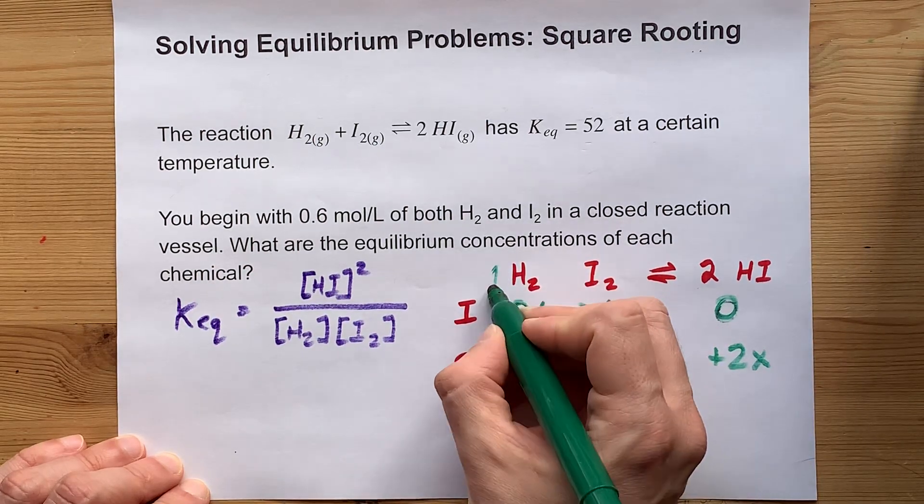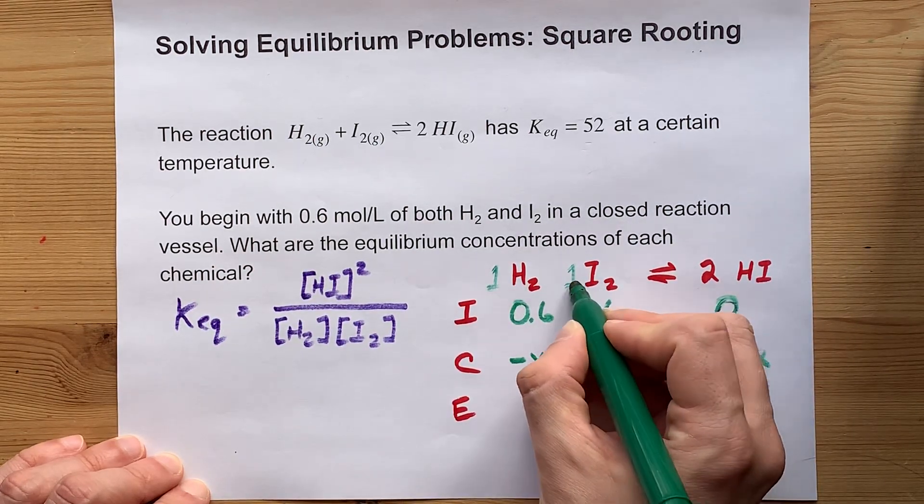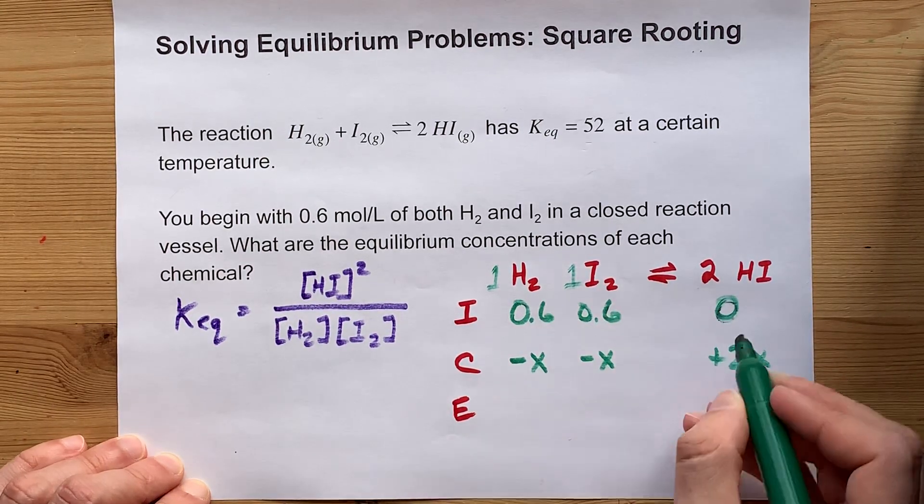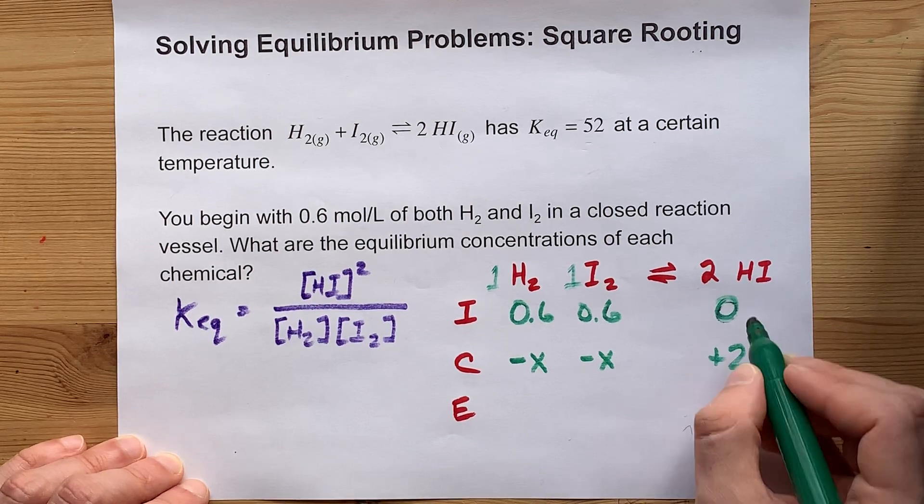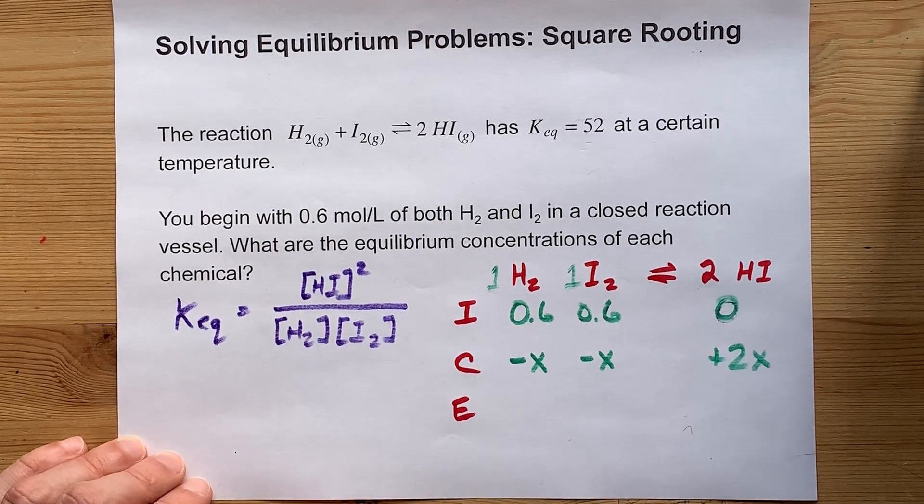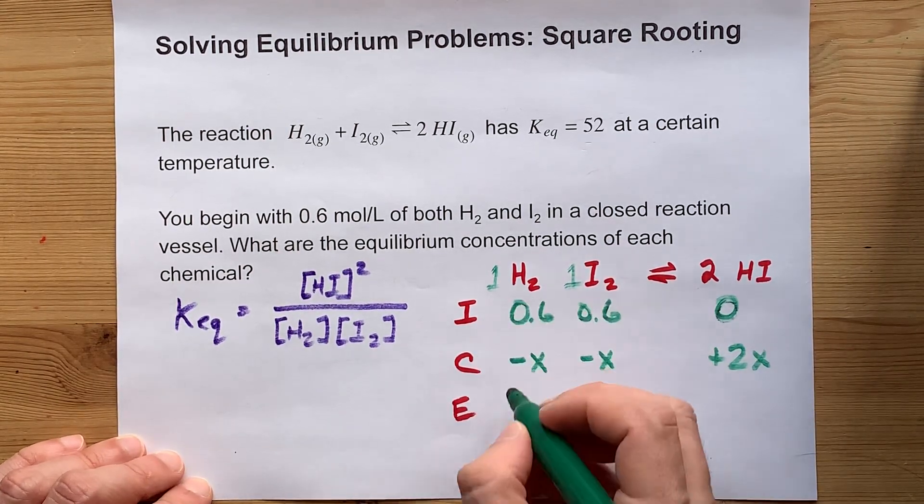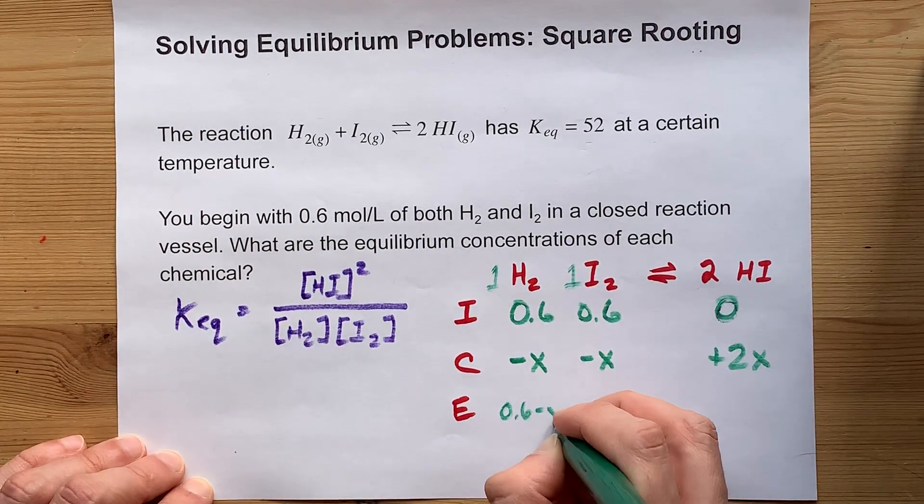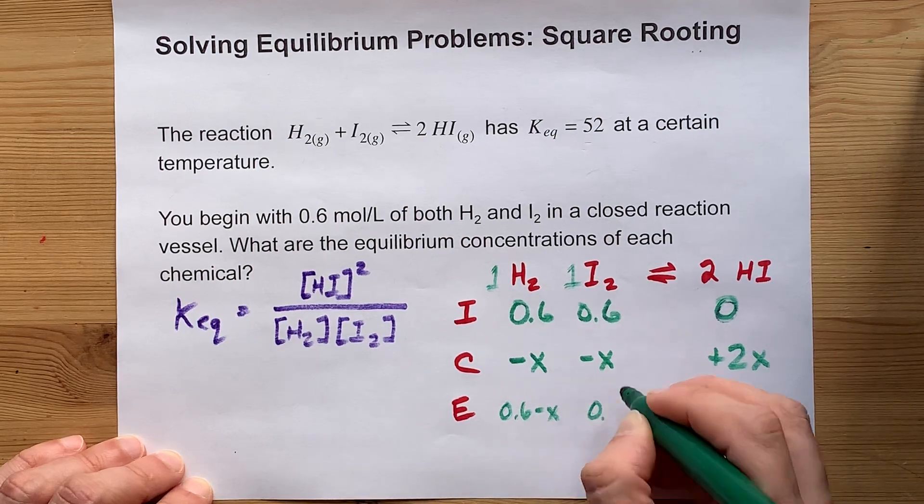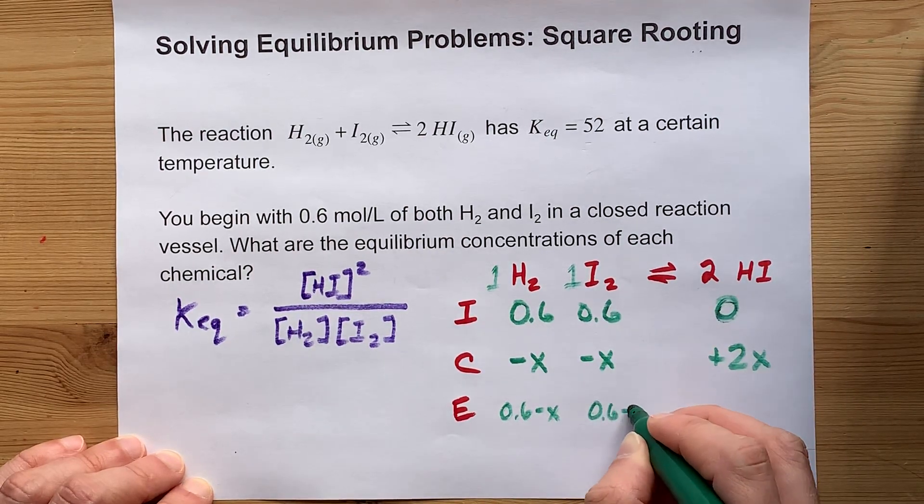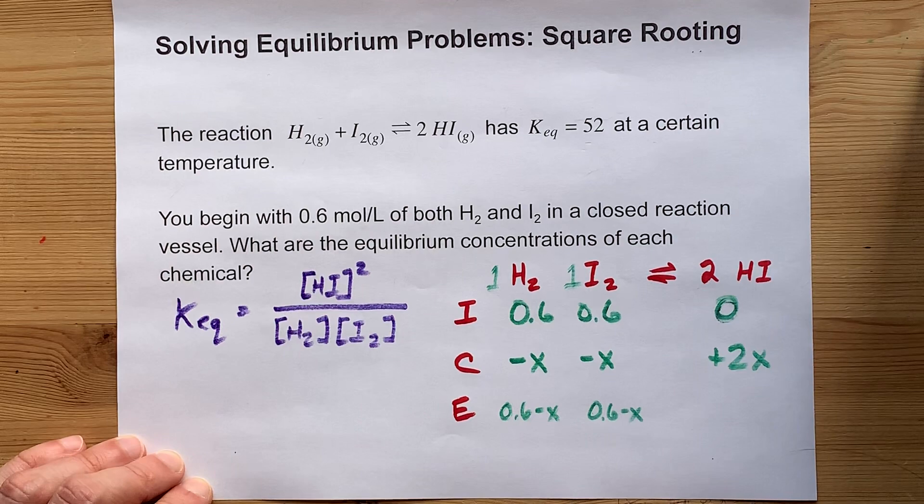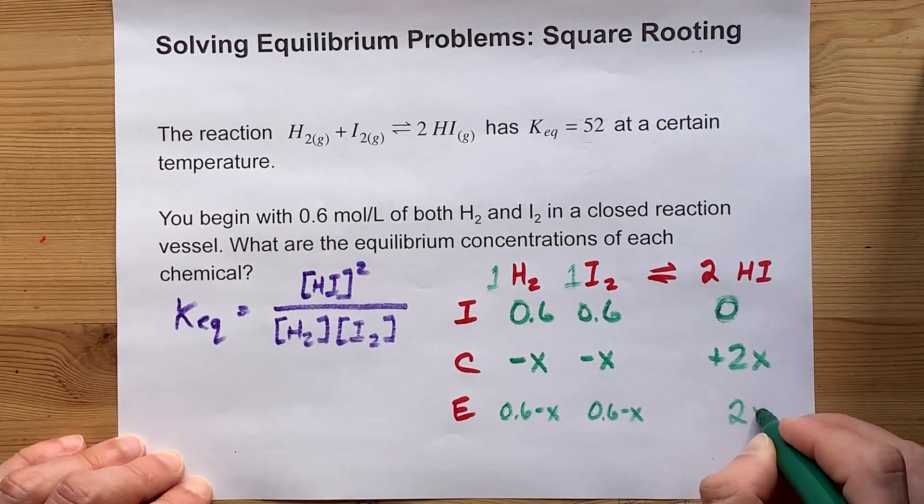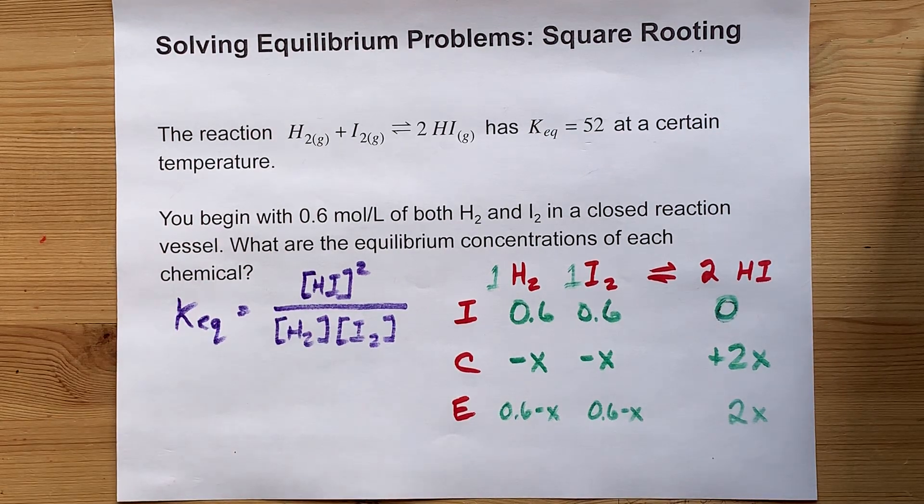If this is a 1 to 1 ratio, this is a 1 to 2 ratio, so where we lost X on the reactant side, we will gain 2X on the product side. That means the equilibrium concentration of H2 is 0.6 minus some amount X. The equilibrium concentration of iodide is 0.6 minus some amount X. And the equilibrium concentration of HI is 0 plus 2X. That simplifies to 2X.